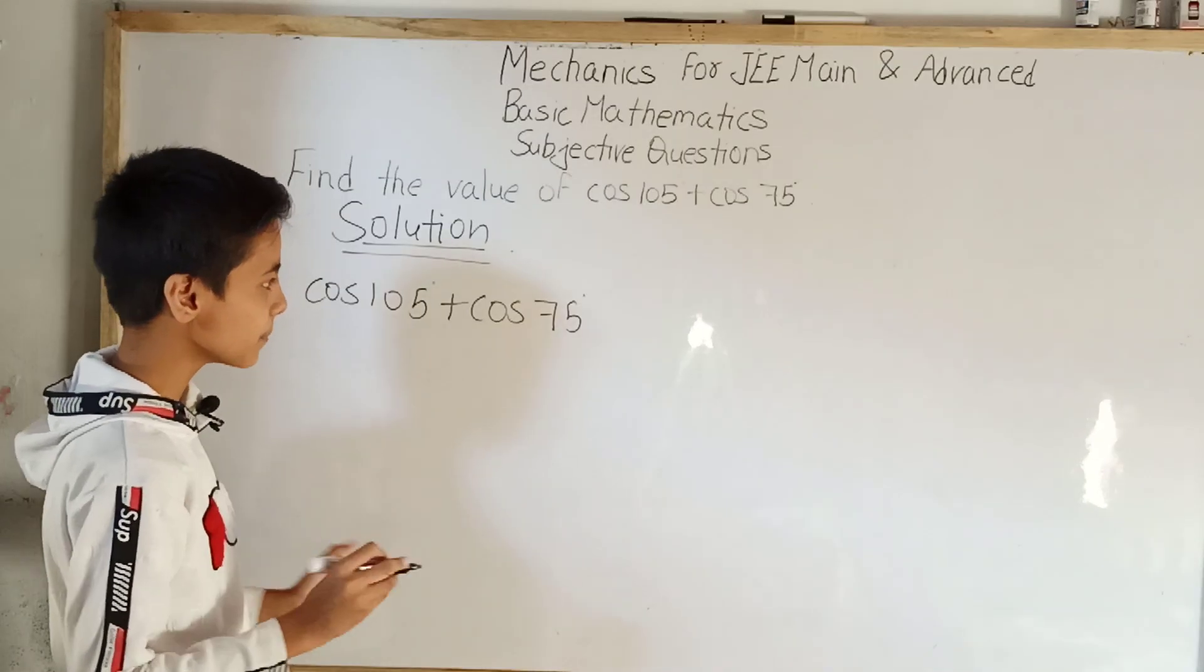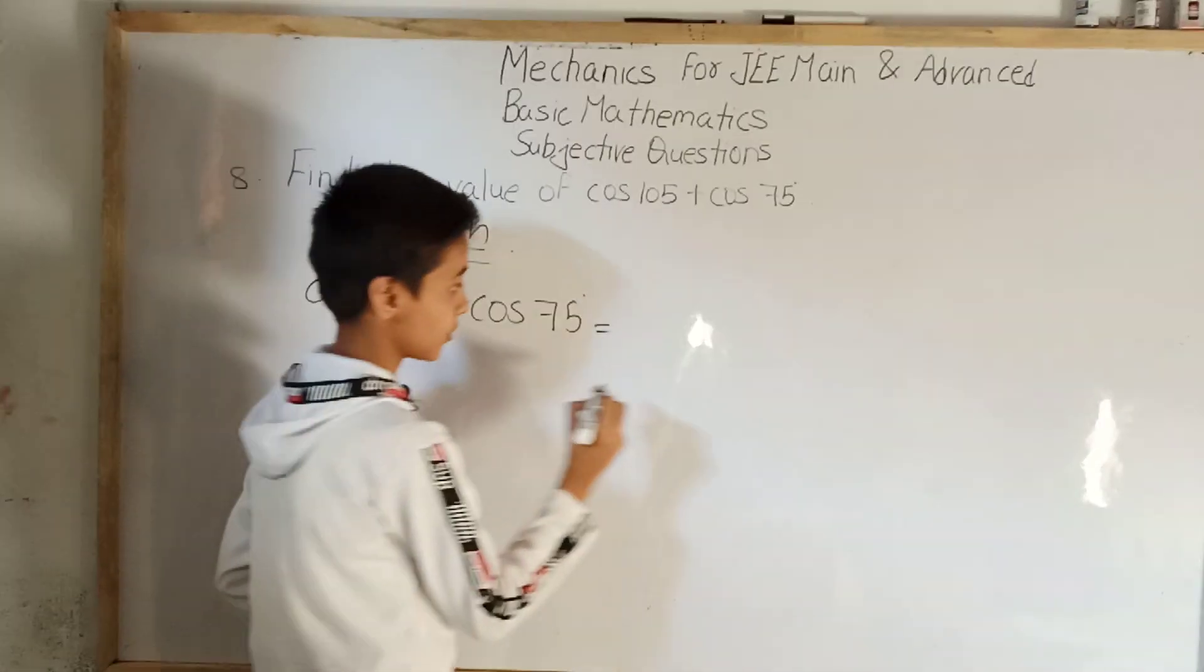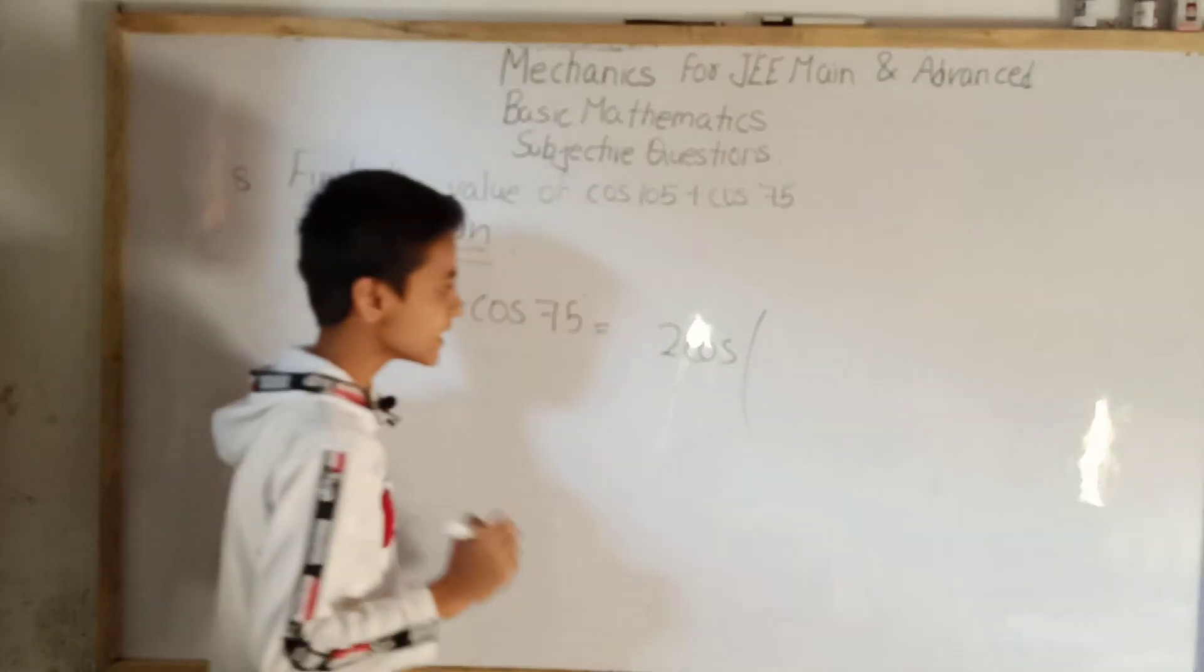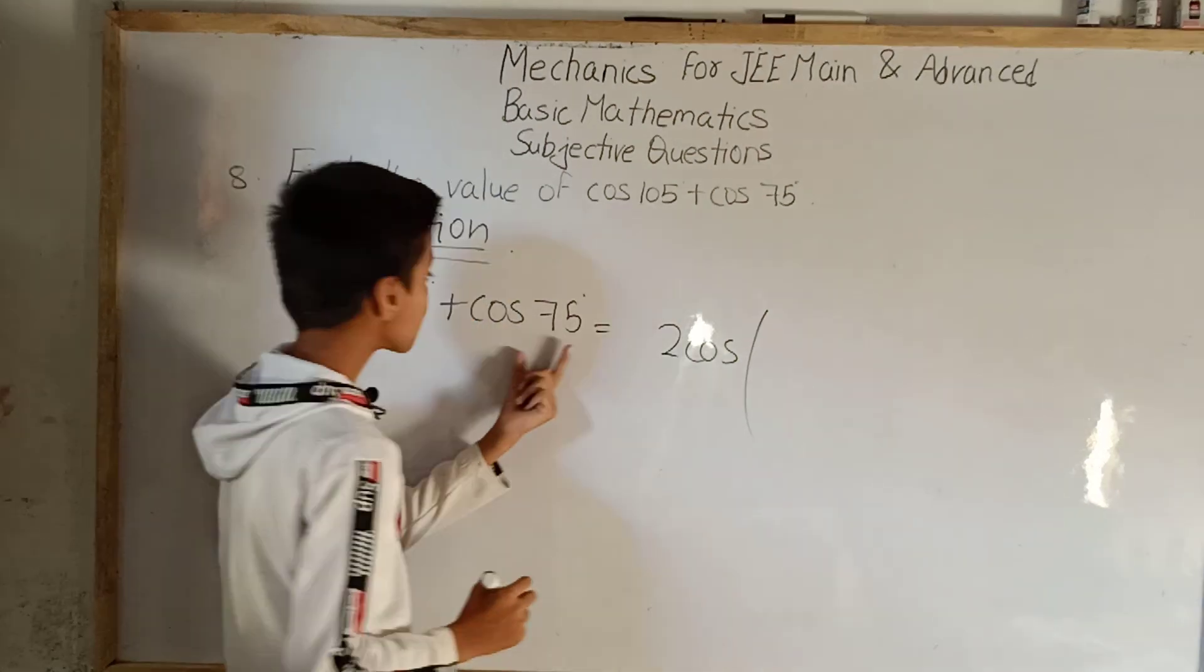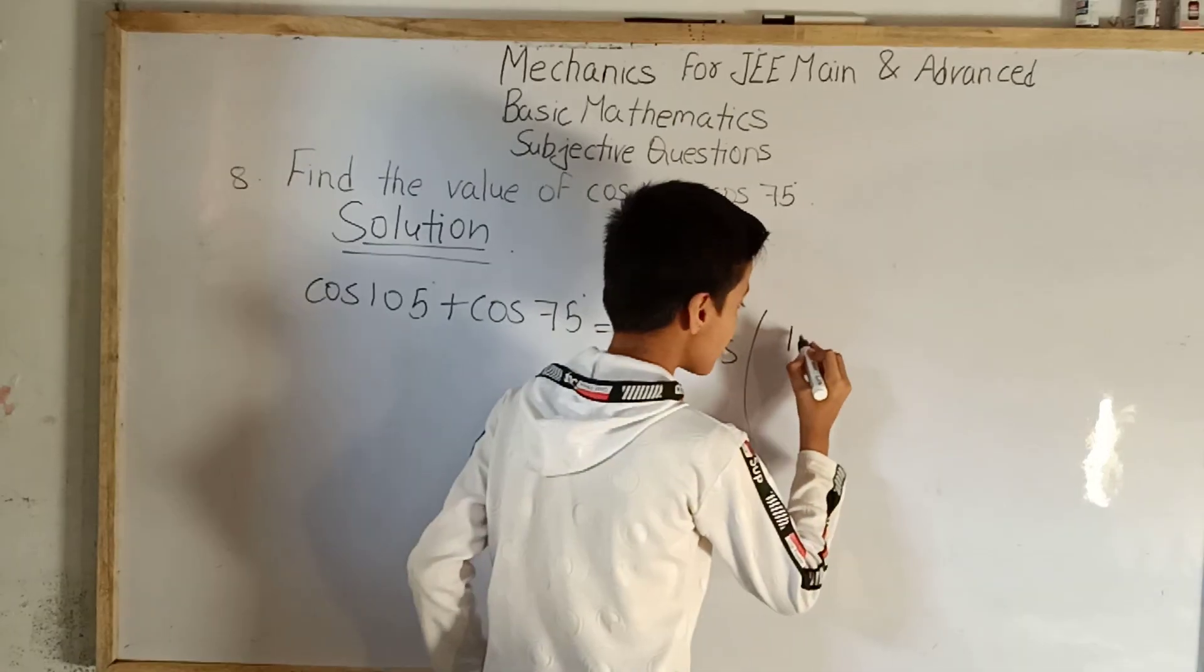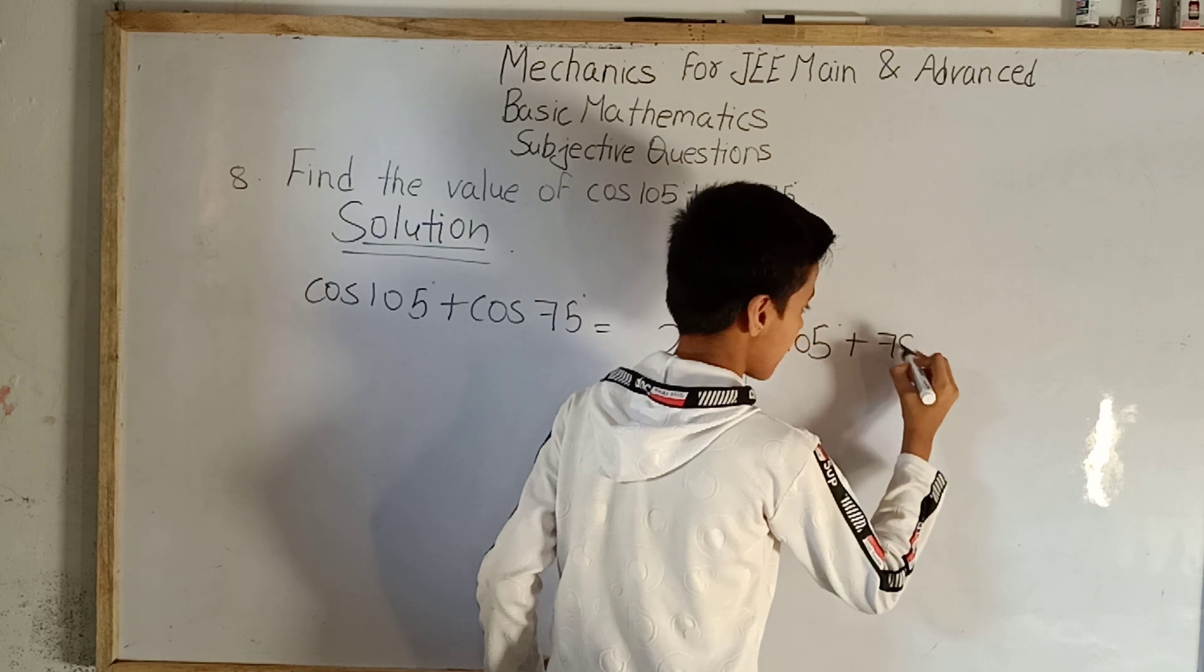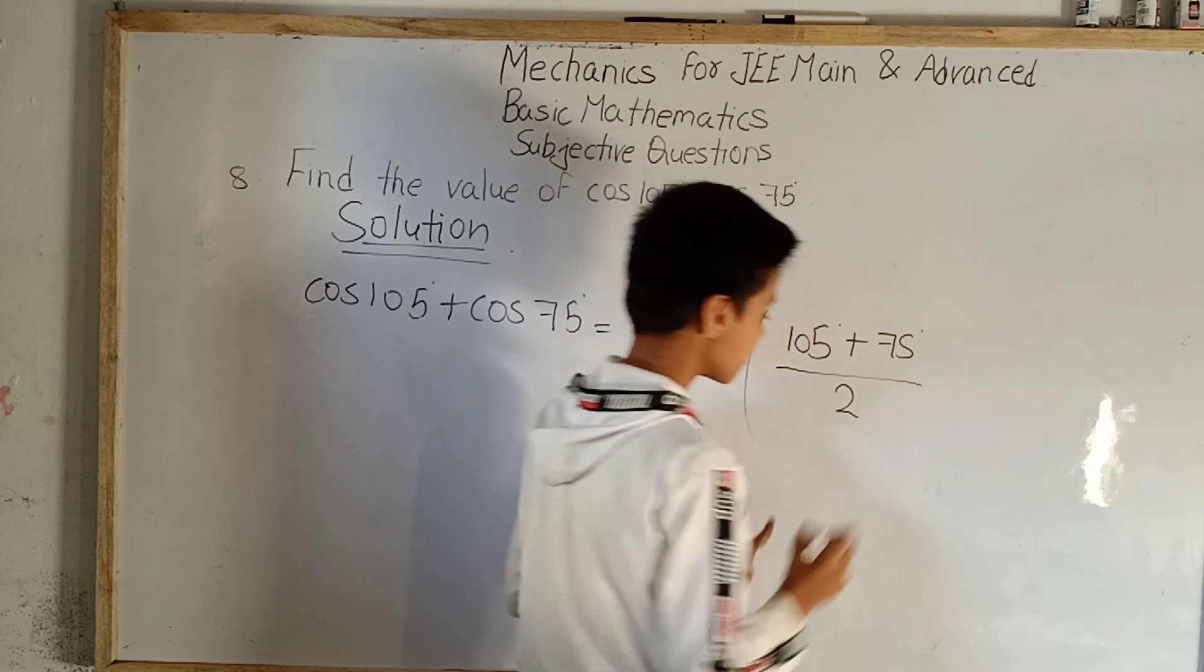For that, the simple step is that it can be written as cos plus cos, which we know is 2 cos. Now we will put a bracket, add 105 degree plus 75 degree, then reduce them to half. So we can write: 2 cos bracket, 105 degree plus 75 degree, divide it by 2, bracket close.